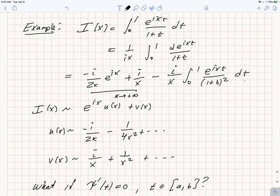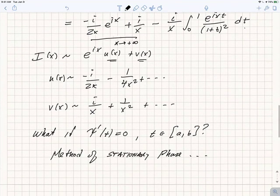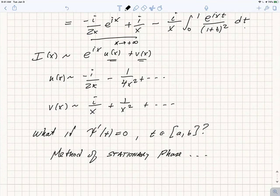In general, the asymptotic expansion has the form e to the i x times some function u, plus a function v, and we can evaluate, say here are the first two terms, we can evaluate as many terms as we want.